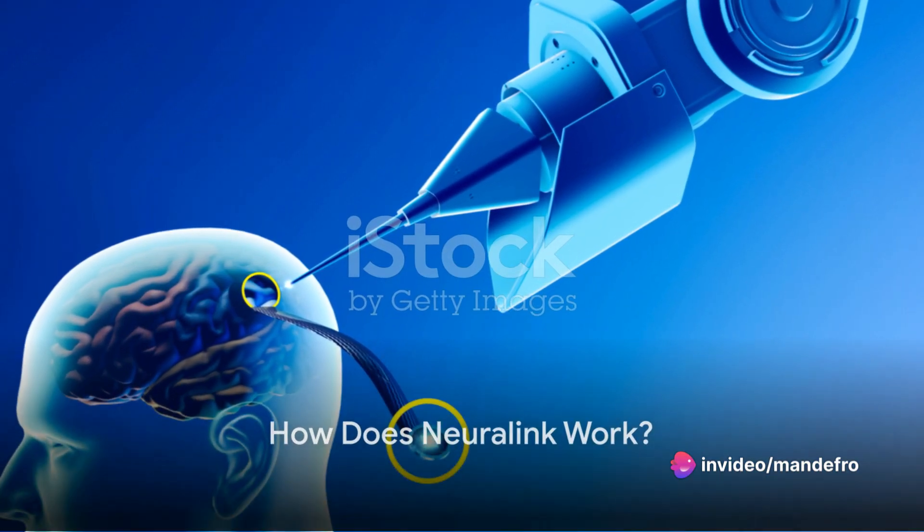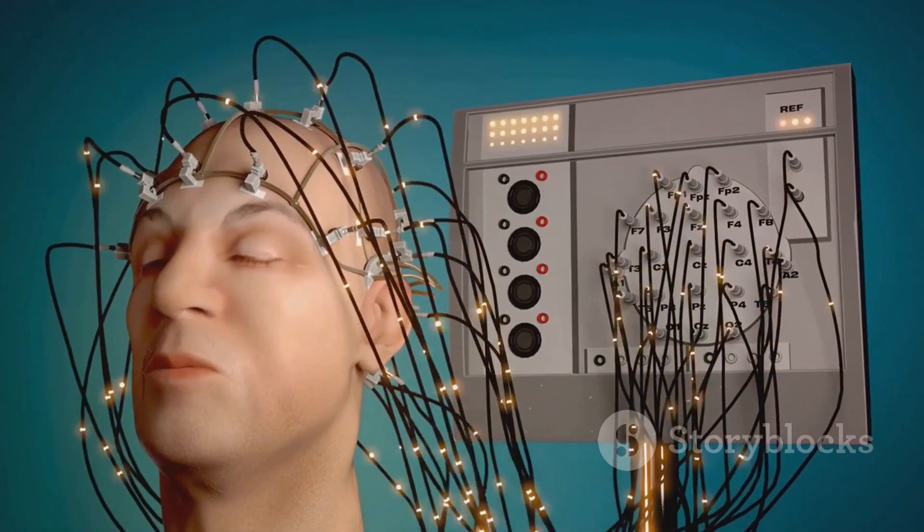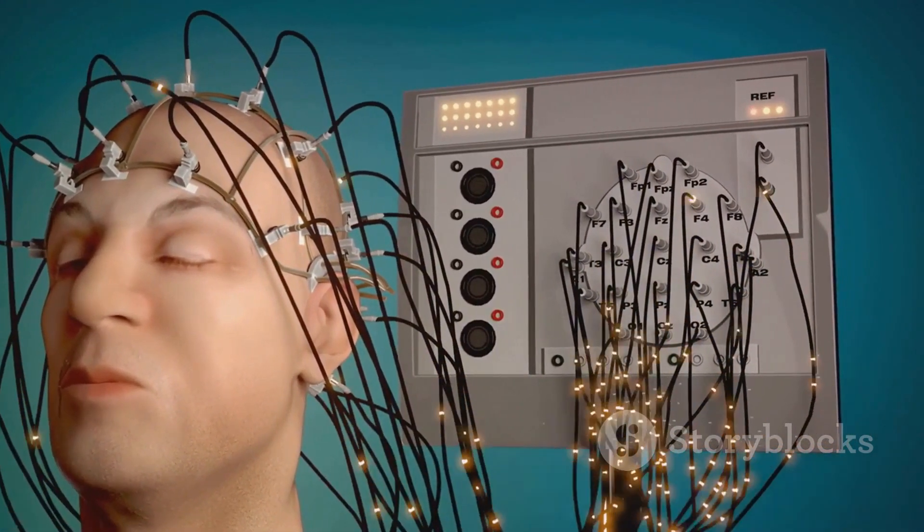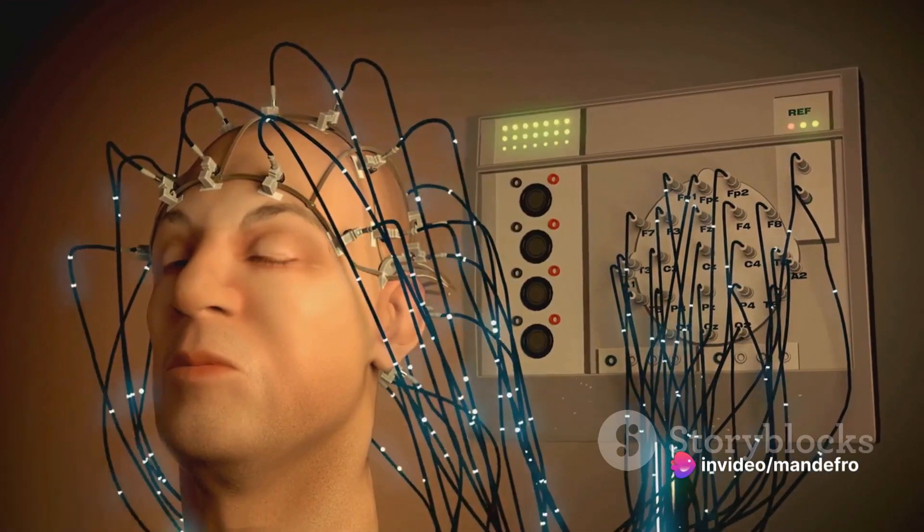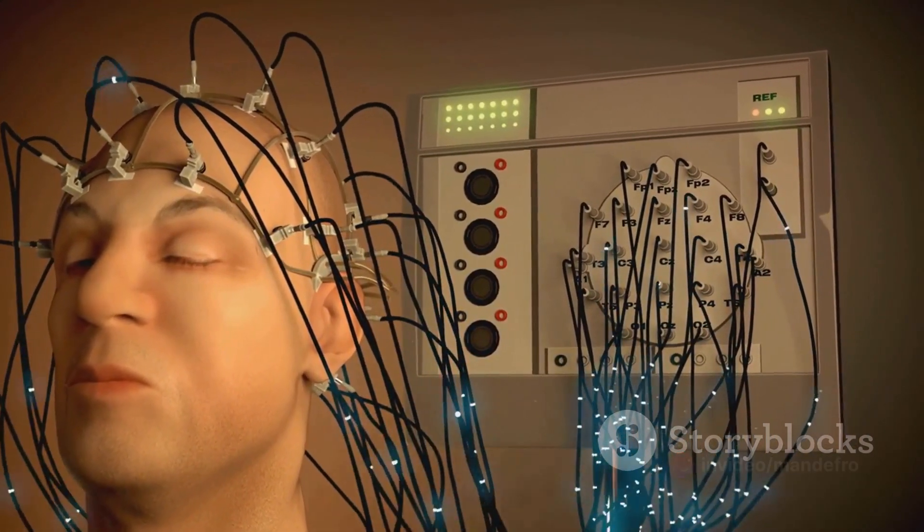Now that we know what Neuralink is, the question arises, how does it work? In essence, Neuralink functions as a high-bandwidth bidirectional interface between your brain and computers. The process begins with the implantation of the Neuralink chip. The chip is about the size of a coin, and it's surgically implanted into the skull by a precision robot designed to avoid any blood vessels.